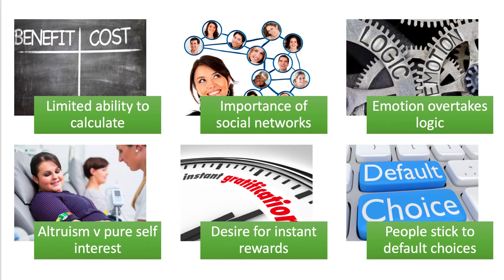So why do people question rational behavior? Firstly, people don't have the full capacity to calculate all the costs and benefits, particularly in a world where products are complex and decisions are difficult to make. People are also often influenced by their own social networks, which challenges the assumption of independent choice — their decisions are influenced by the choices that other people make, often within close-knit networks.